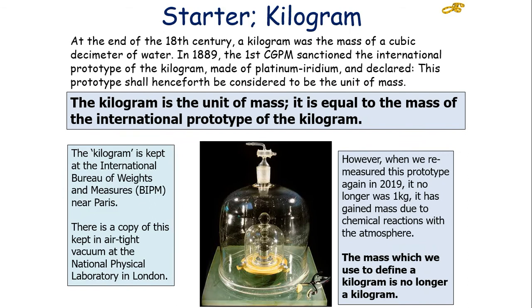The kilogram is another SI-based unit. At the end of the 18th century, a kilogram was the mass of a cubic decimeter of water. In 1889, the first CGPM sanctioned the international prototype of the kilogram, which was made of platinum-iridium, and declared this prototype should be known as the unit of mass. The kilogram is actually kept at the International Bureau of Weights and Measures near Paris, and a copy of this is kept in an airtight vacuum at the National Physics Laboratory in London. However, when we actually remeasured the prototype again in 2009, it was no longer one kilogram, as it had gained mass due to chemical reactions with the atmosphere.